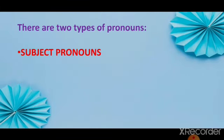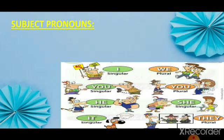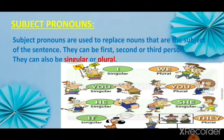Now, there are two types of pronouns. What are they? Subject pronouns and object pronouns. What are subject pronouns? Subject pronouns are used to replace nouns that are the subject of the sentence. They can be first, second, or third person, and they can also be singular or plural. The subject pronouns are: I, we, you, he, she, it, and they.